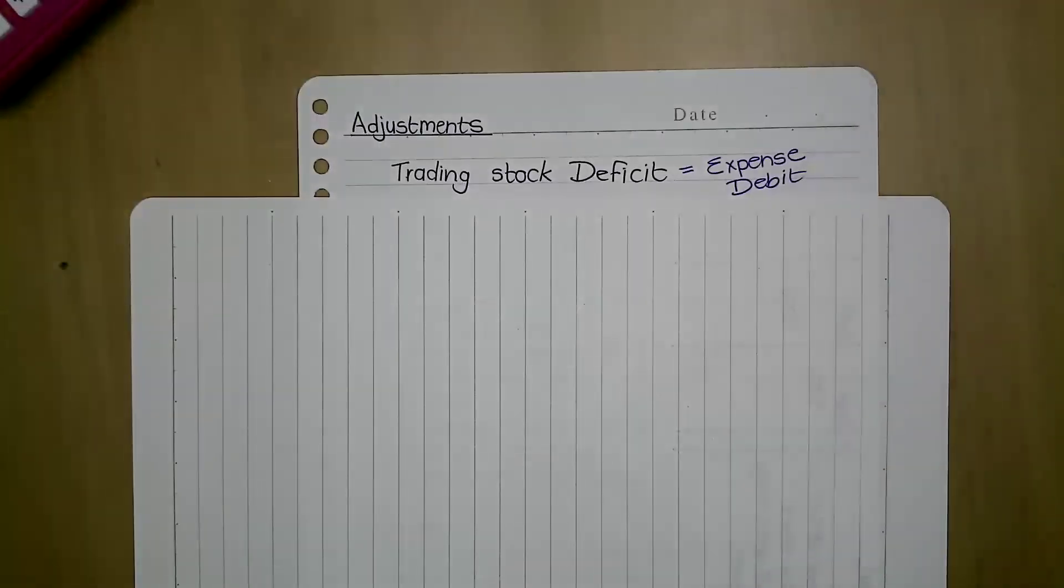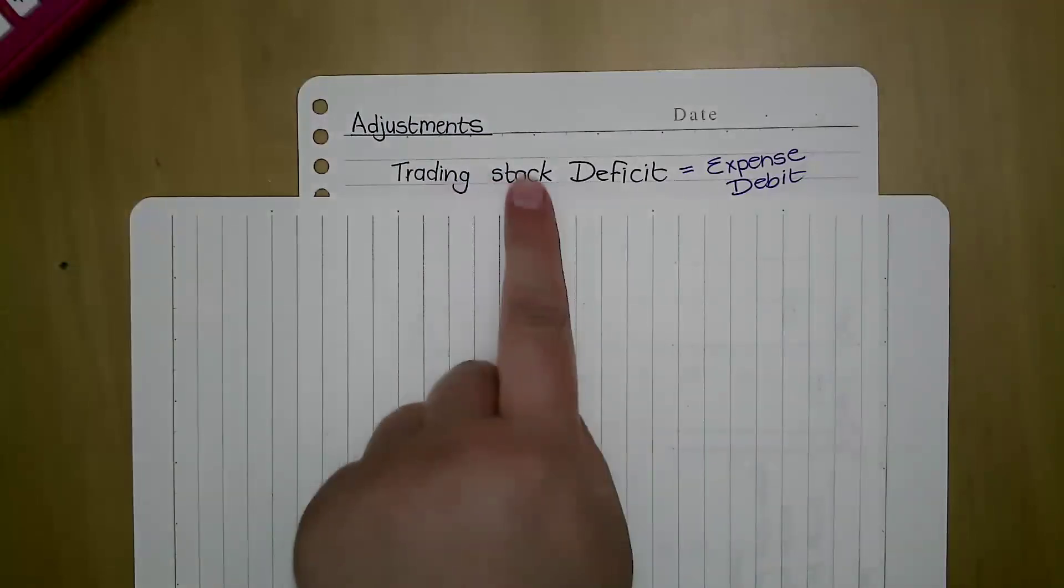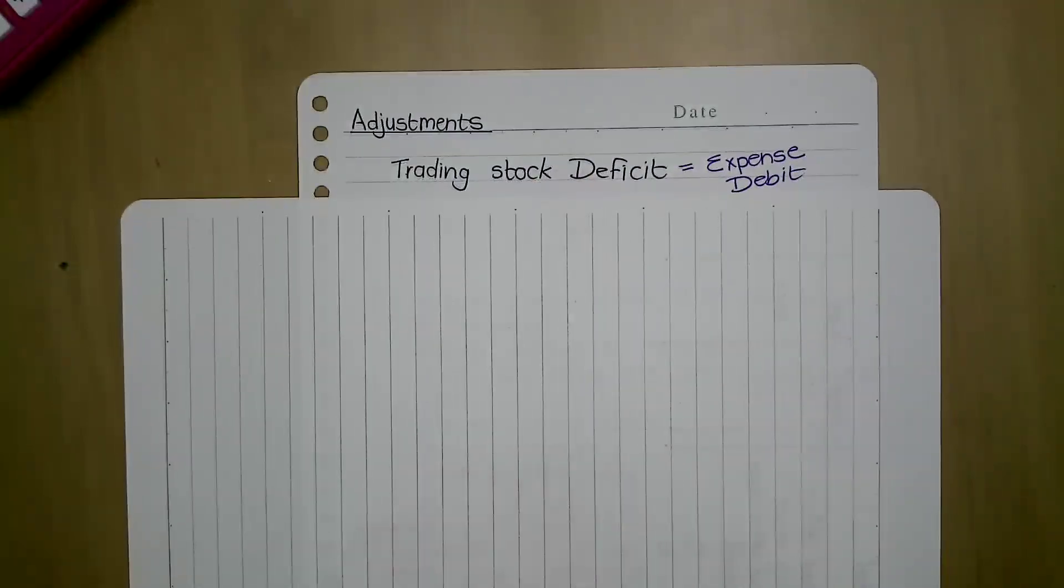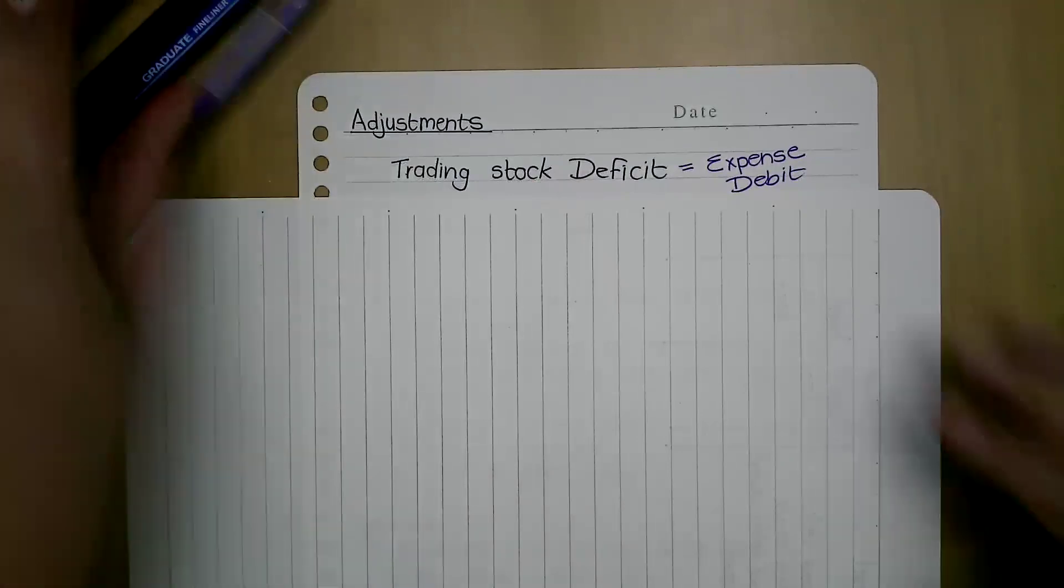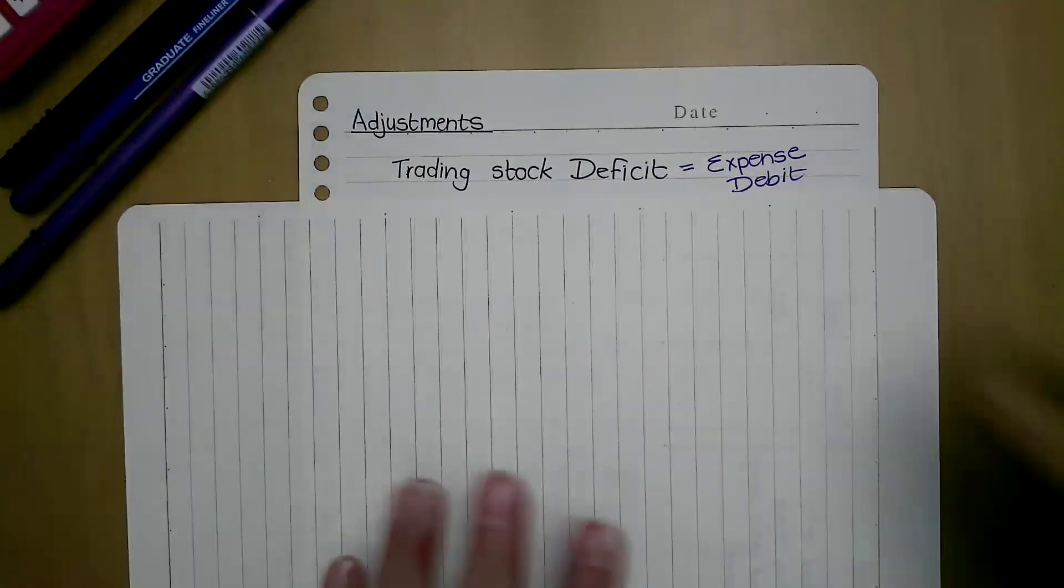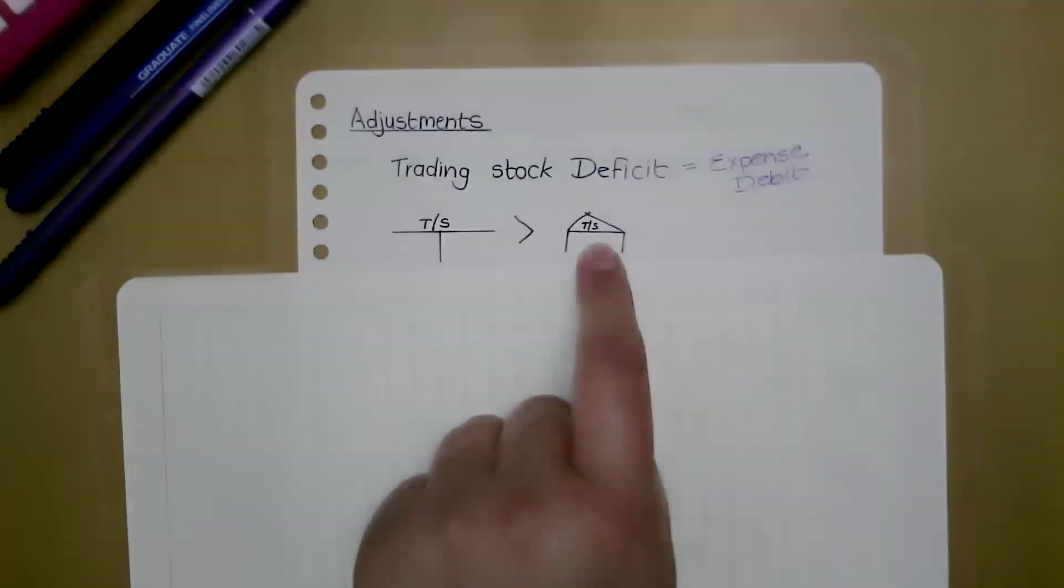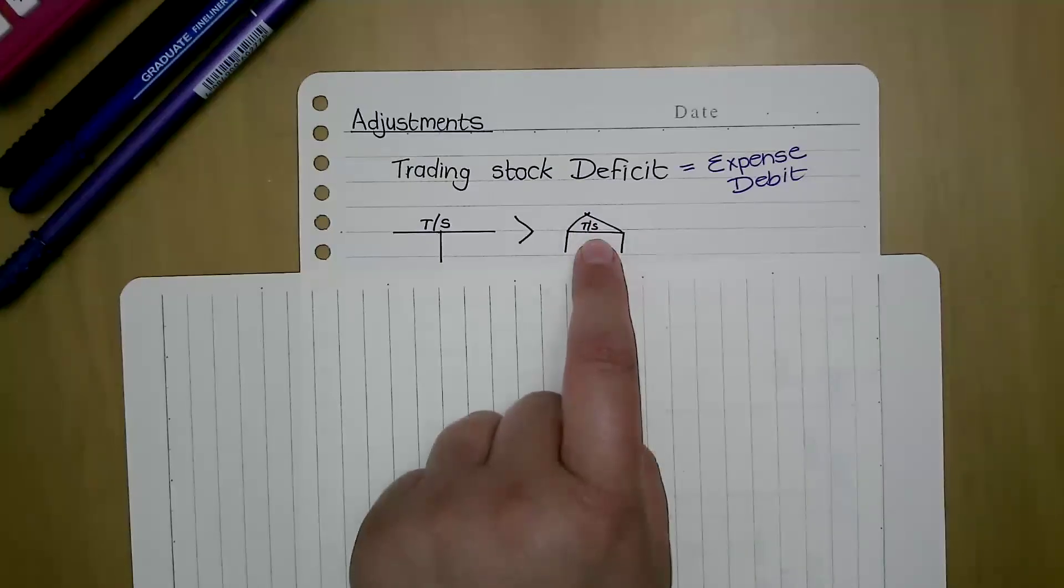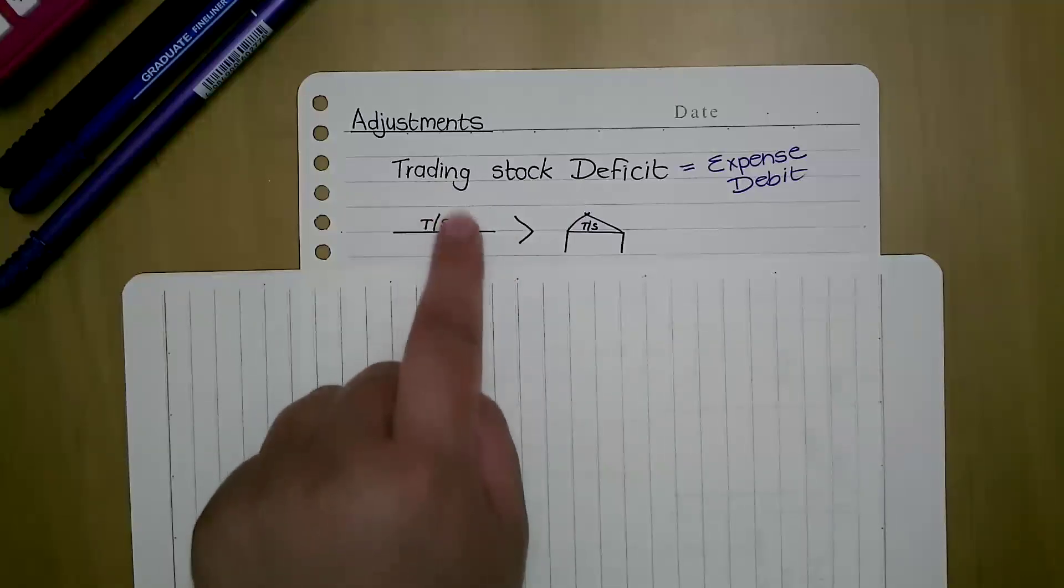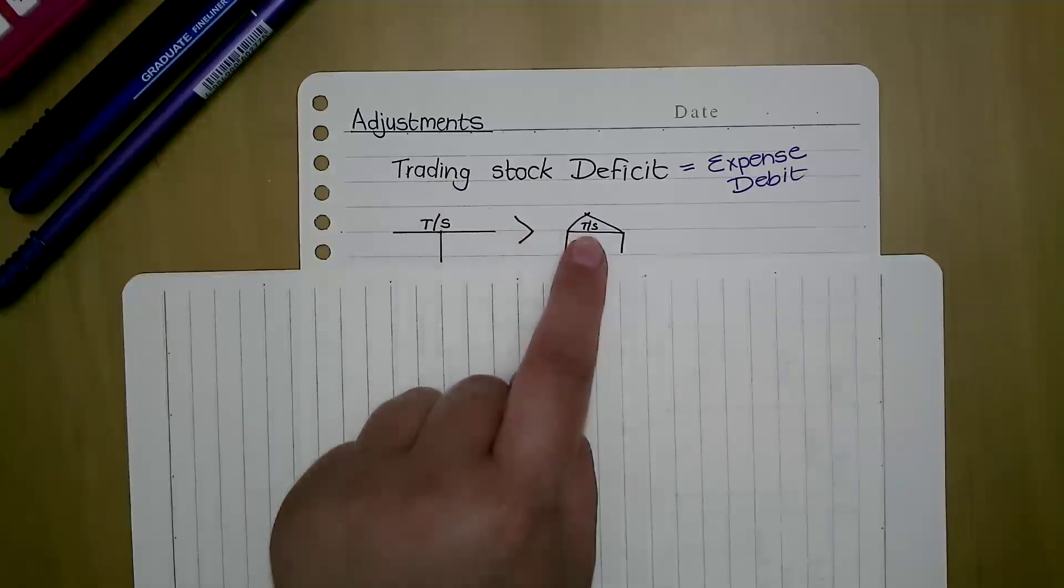Welcome back future accountants. I'm doing another lesson on adjustments, focusing on trading stock deficits. Trading stock deficit is an expense, it is debited. At financial year end, we are physically counting our stock to determine how much stock is in our warehouse, how much stock we can touch and see. In the event that our trading stock account in our books is bigger than the warehouse, we have a trading stock deficit.